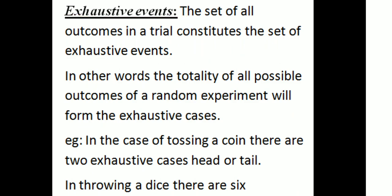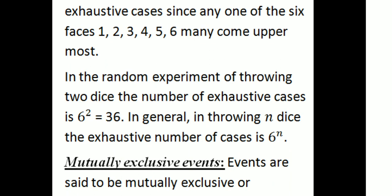Exhaustive events: the set of all outcomes in a trial constitutes the set of exhaustive events. In other words, the totality of all possible outcomes of a random experiment forms the exhaustive cases. For example, in tossing a coin there are two exhaustive cases — head or tail. In throwing a die, there are six exhaustive cases since any one of the six faces, that is 1, 2, 3, 4, 5, or 6, may come uppermost.